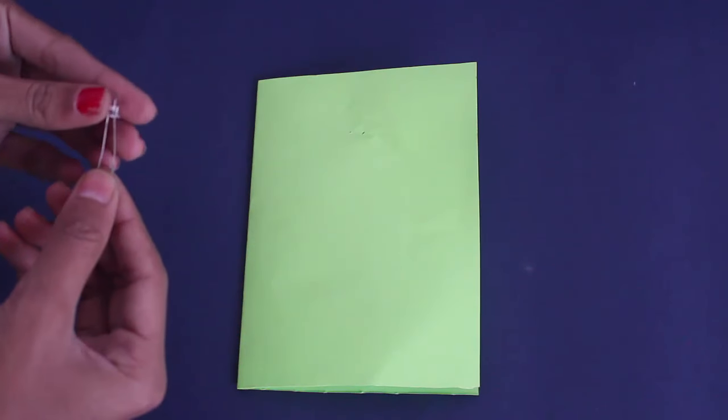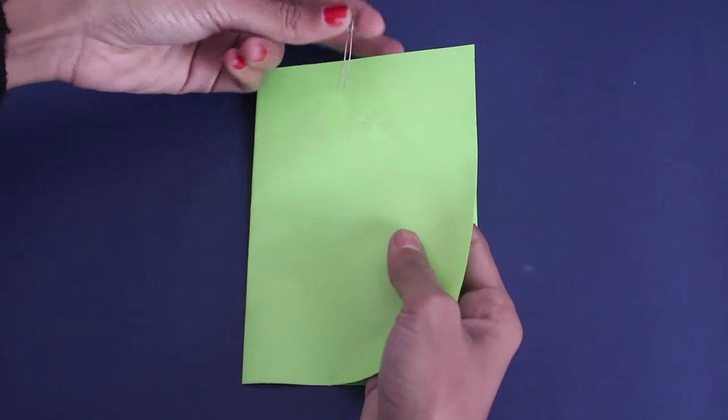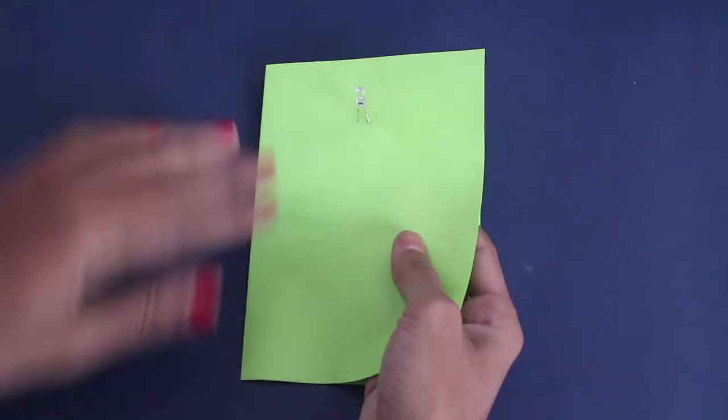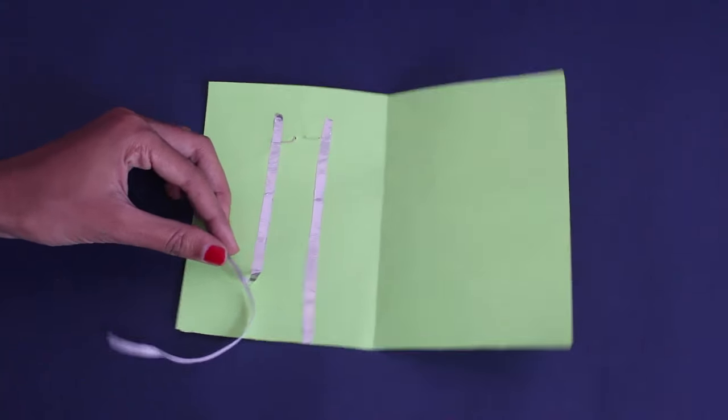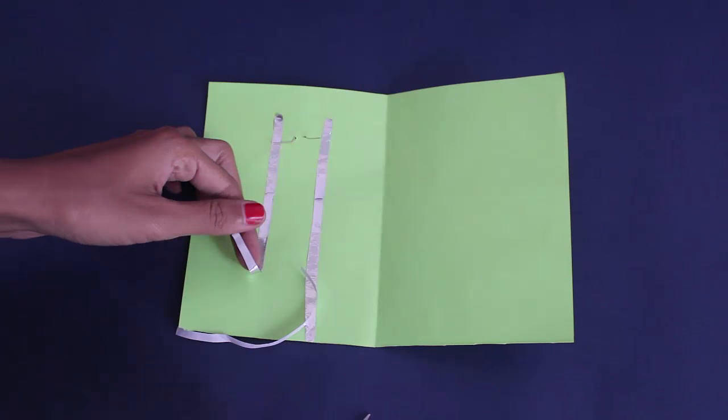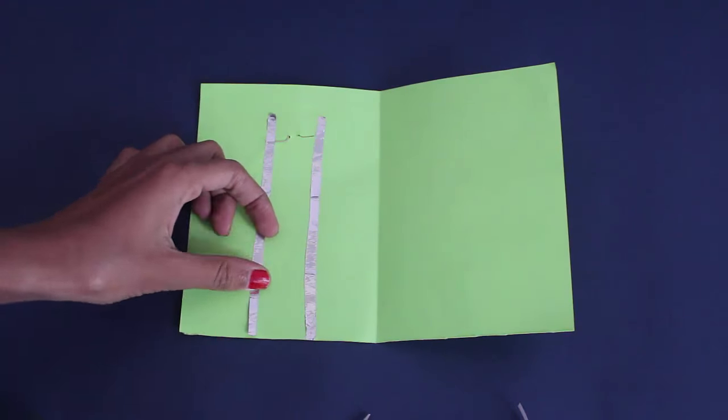On touching the bent strip, it will touch the button cell, completing the circuit and lighting the LED. Now you can draw a card with a Christmas tree and place the LED right on top of the tree.